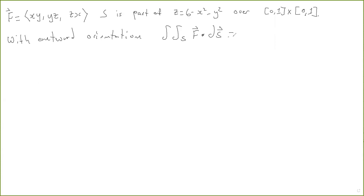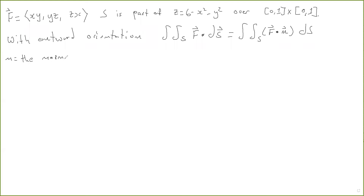This integral is defined as the surface integral over S of the scalar-valued function F dotted with n, times dS. F dotted with n is a scalar-valued function, so this integral is the integral of a scalar field over the surface. Now n is the normal vector, and it needs to be consistent with the orientation. So if it has an outward orientation, the normal vector needs to be pointing outward.